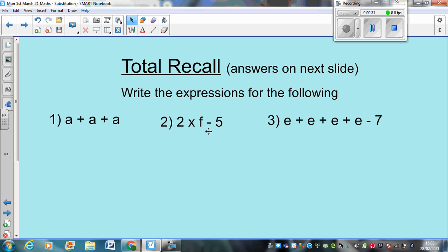2 times F, take away 5, how would we write that? 2 times F, take away 5. And 3, E plus E plus E plus E, take away 7, how would we write that? Pause now, and I'll give you the answers in a second.